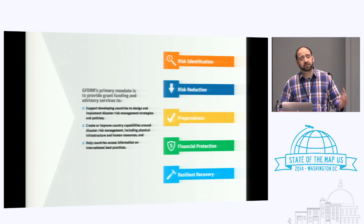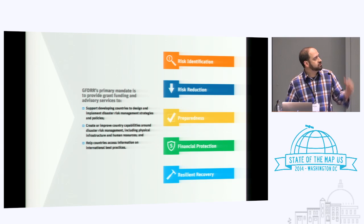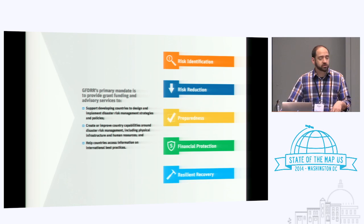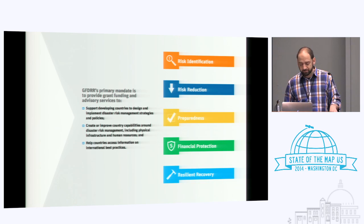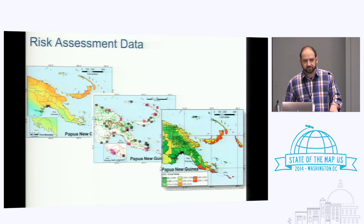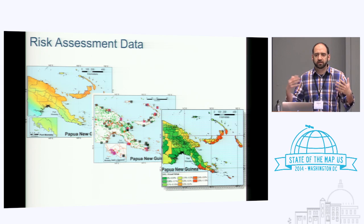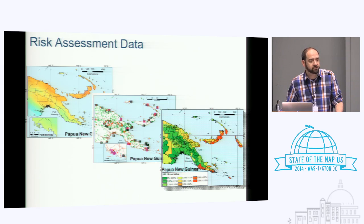Last year we worked in over 80 different countries along roughly five pillars of work: risk identification, risk reduction, preparedness, financial protection, and resilient recovery. It's really that first pillar that I work on and that's going to be most interesting to what we're talking about today, and that is risk identification.